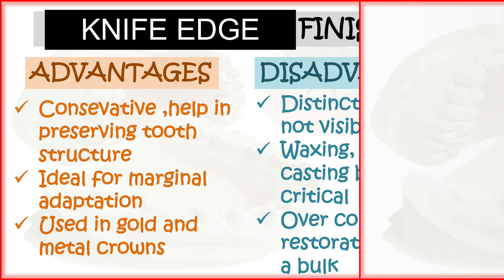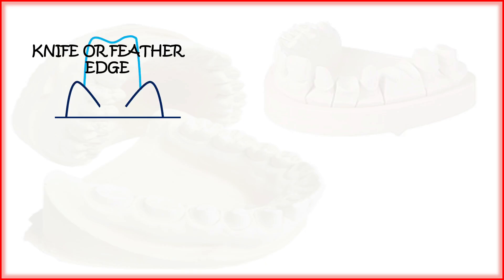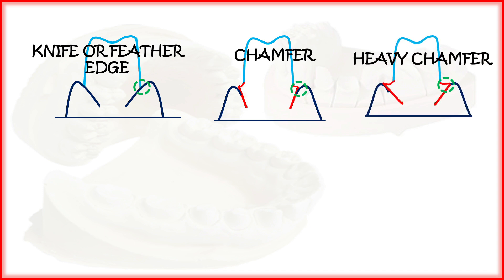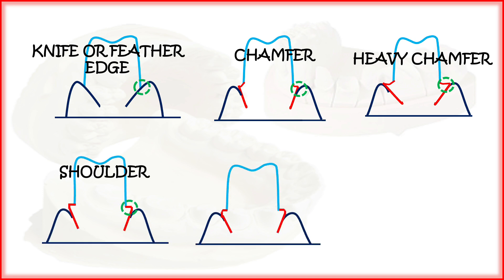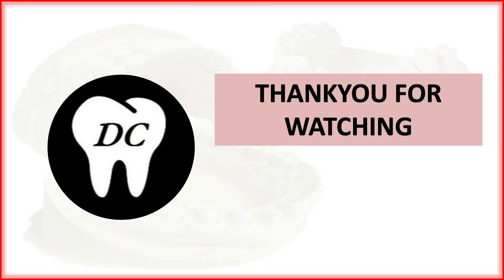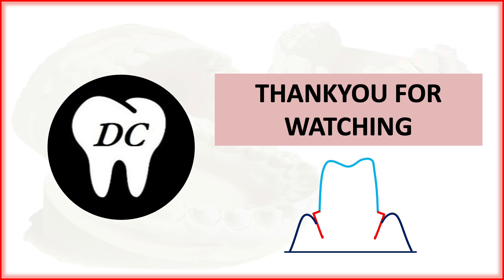Disadvantages of knife edge finish line: the distinct finish line is not visible, making waxing, polishing, and casting difficult, and over-contouring of the restoration may occur to obtain bulk. In summary, the finish lines from least to most reduction are: knife/feather edge, chamfer, heavy chamfer, shoulder, beveled shoulder, and sloping shoulder. I hope this video was helpful — if you have any questions, ask in the comment section.